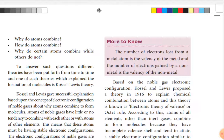Atoms combine to form molecules because of the electrostatic force of attraction between them. Atoms which have a stable electronic configuration in their outermost shell will not combine. Stable electronic configuration means atoms having eight electrons in the outer shell — like rare gases such as argon, neon — they will not combine.